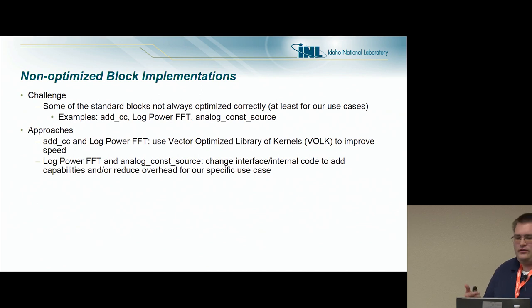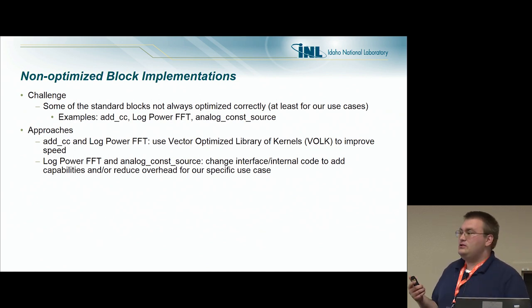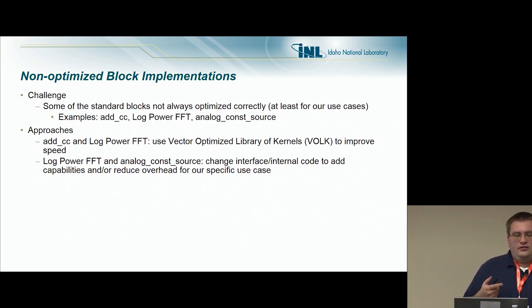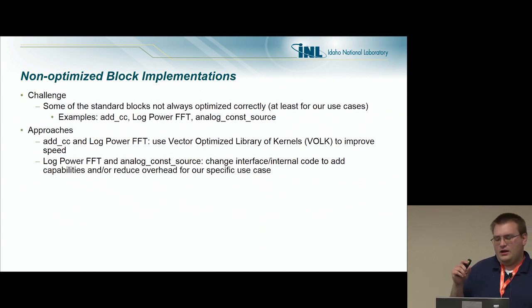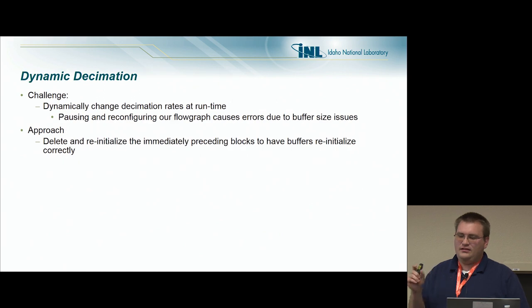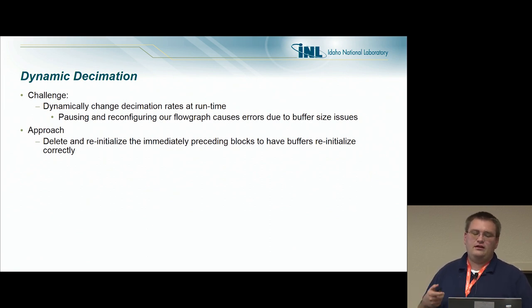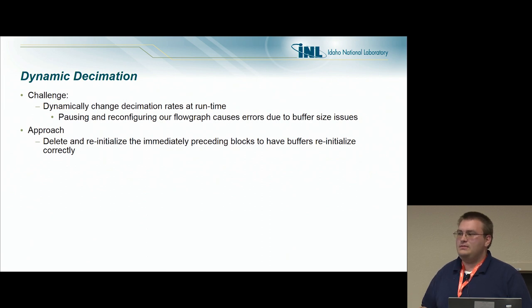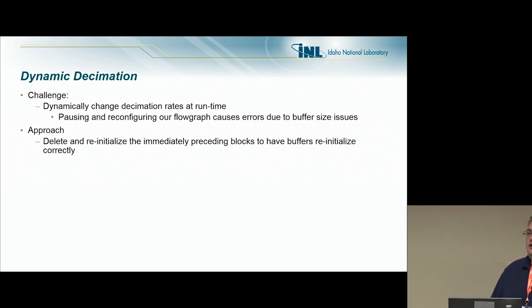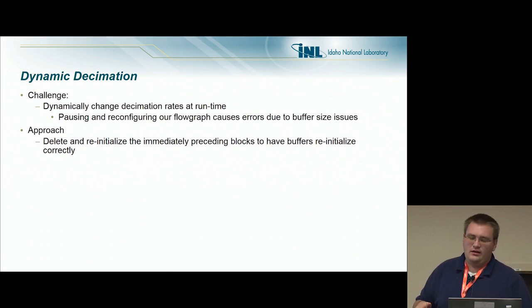As part of reconfiguration, we wanted to dynamically change decimation rates at runtime. Within the flow graph, one part controls how much data is sent to the machine learning blocks using a constant decimation rate that we reconfigure over the runtime. However, this caused errors due to buffer size mismatches when pausing and reconfiguring the flow graph. The solution was to delete and reinitialize the immediately preceding blocks whenever stopping the flow graph to reconfigure, so GNU Radio would properly reinitialize those buffers.